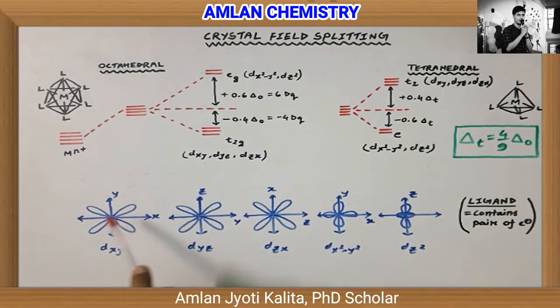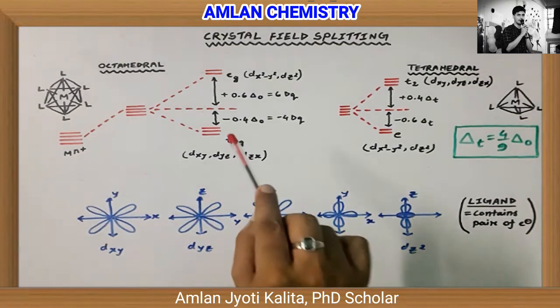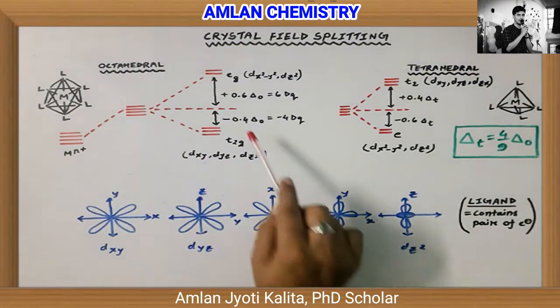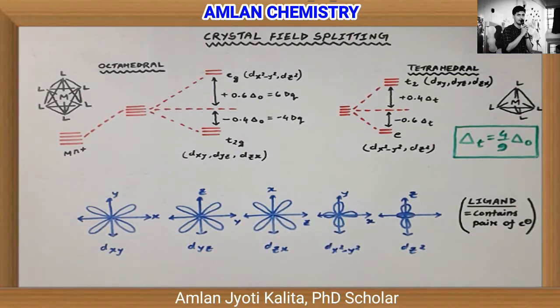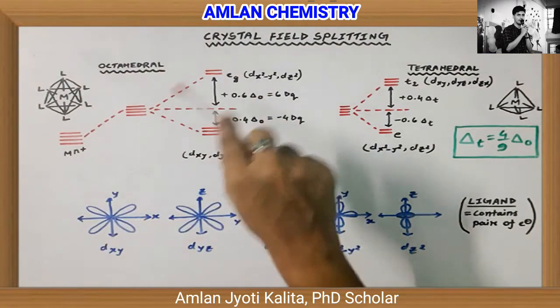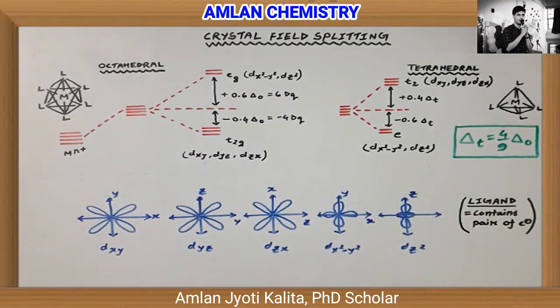The rest of the three orbitals, which are not along the axis but between the axes, have lower energy by 0.4ΔO or 4dq. This way, octahedral complexes split in the presence of ligands, depending upon their nature—whether strong or weak—when they bind with the metal.